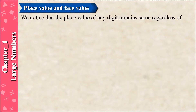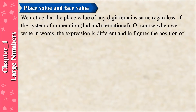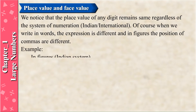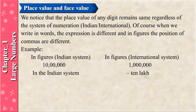We notice that the place value of any digit remains the same regardless of the system of numeration, Indian or international. Of course, when we write in words the expression is different, and in figures the position of commas are different. For example, in the Indian system: 10,00,000 (ten lakh); in the international system: 1,000,000 (one million).